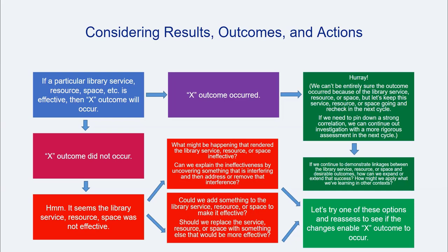If the outcome does not occur, then it would seem, at least based on the results, that the library service, resource, or space was not effective in producing the outcome. Library assessment practitioners might attempt to explore what rendered the library offering ineffective, or might consider ways something could be added to or changed to make it more effective. Another cycle of assessment can then be employed to see if anything has changed.